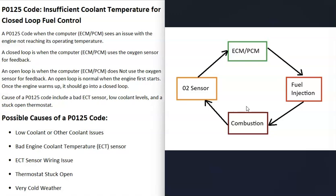The engine will run in open loop, but it won't run as well as it could. One of the things needed to go into closed loop is for the engine to reach operating temperature, which usually happens within a minute or so. When you get a P0125 code, something's going wrong and the engine isn't reaching the operating temperature needed for closed loop to happen — so you'll need to troubleshoot why.